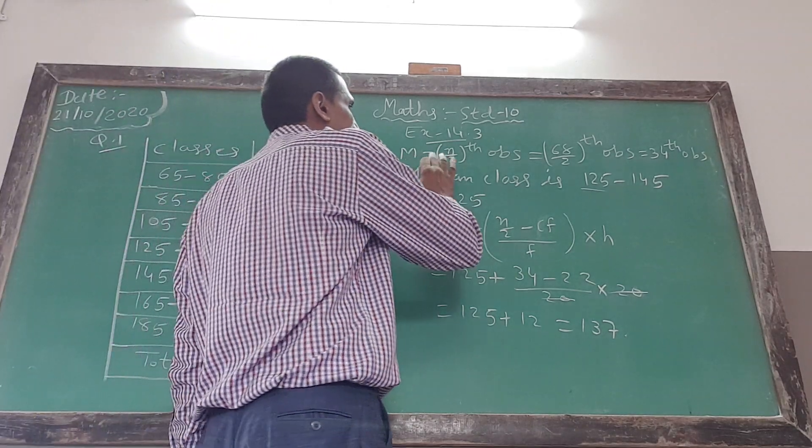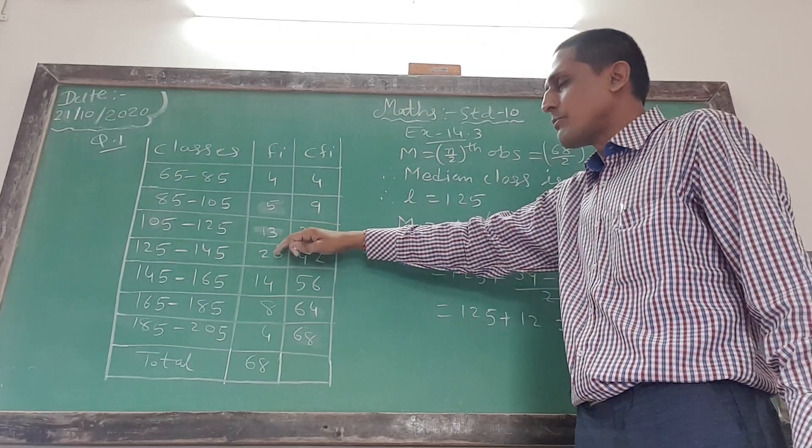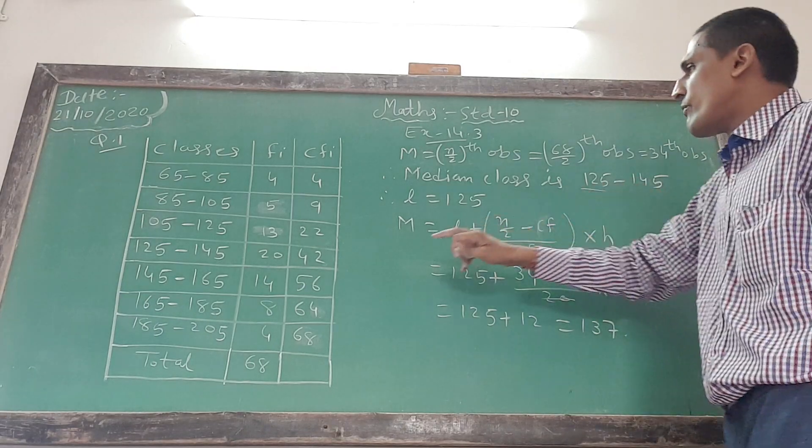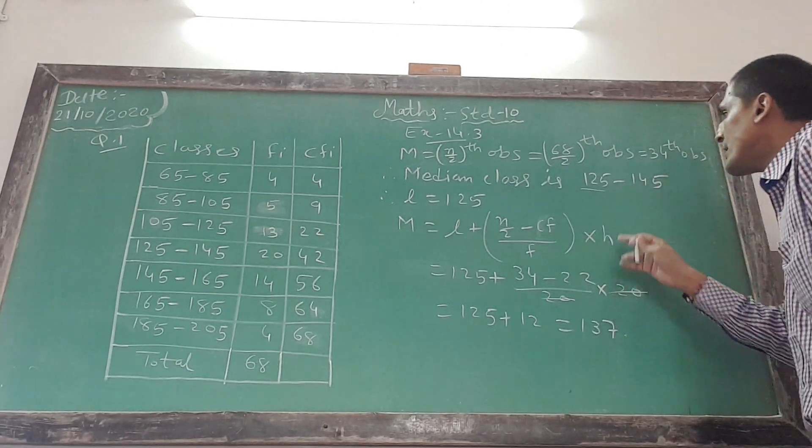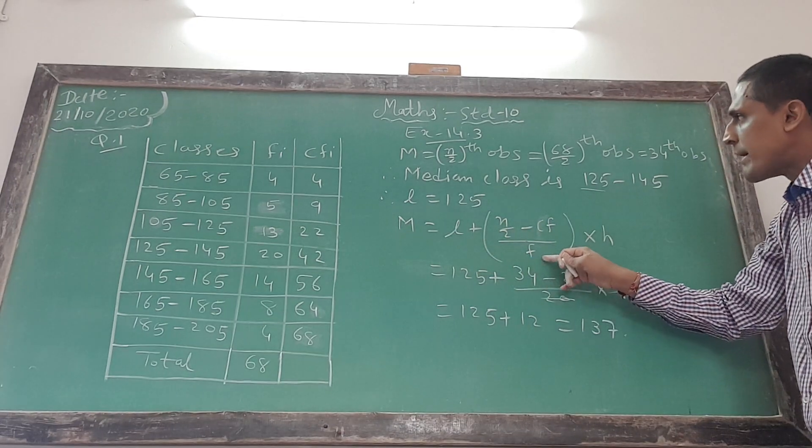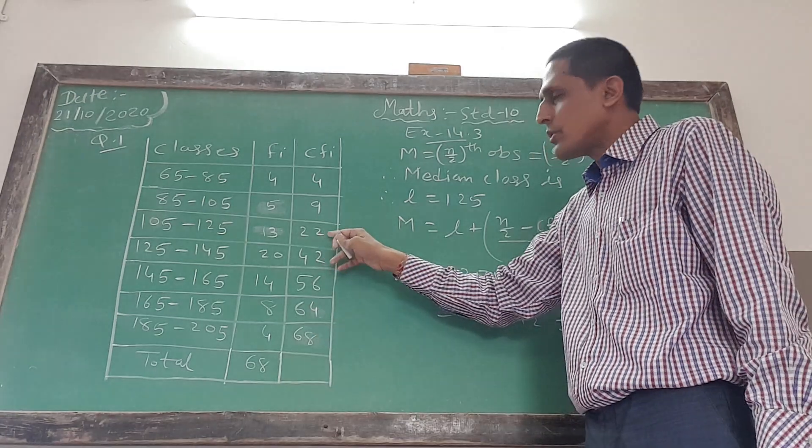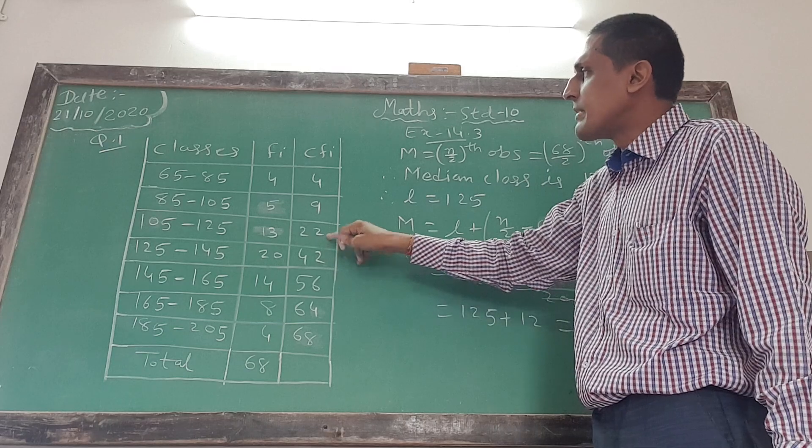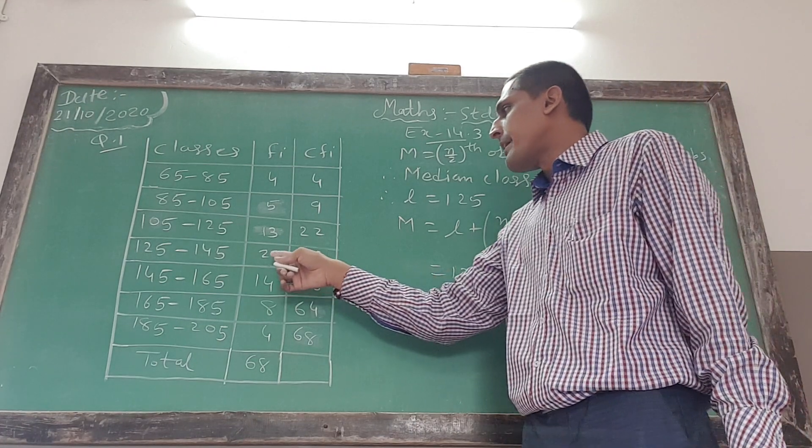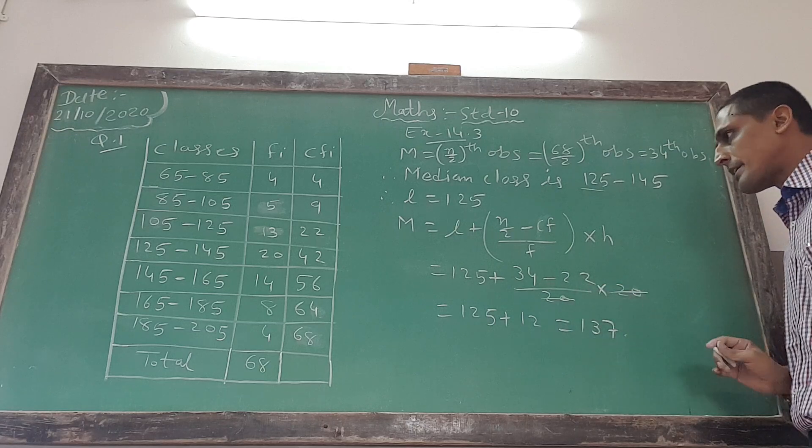So if you check: N by 2 is 34, CF is 22, frequency is 24, class size is 25. 125 plus 24 equals 137.27.